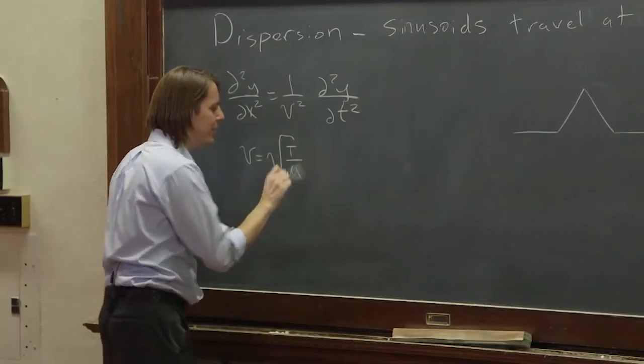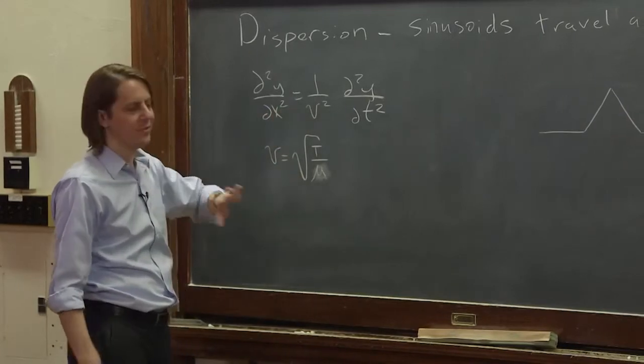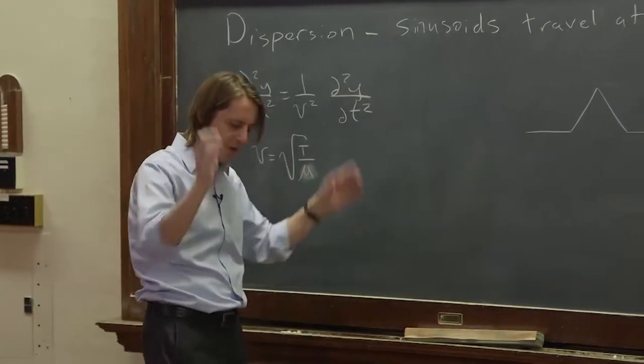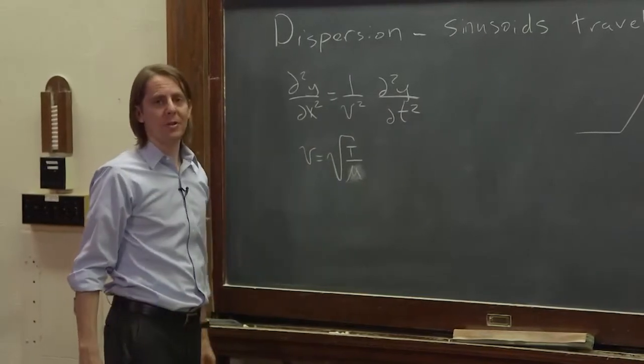And we even did a demonstration where we checked it. We put a known tension, known mass density. We watched the pulse go by, measured its speed. Everything was fine. So it appeared that all sinusoids go at the same speed.